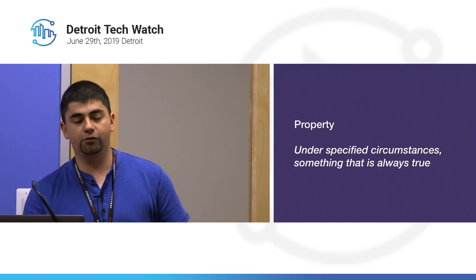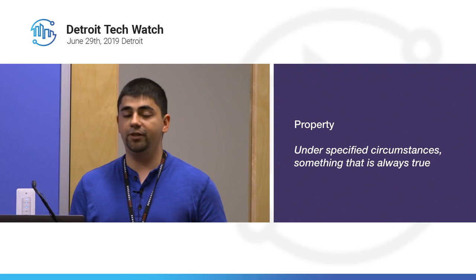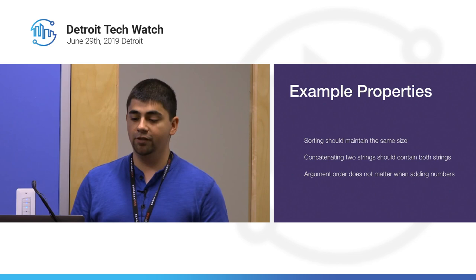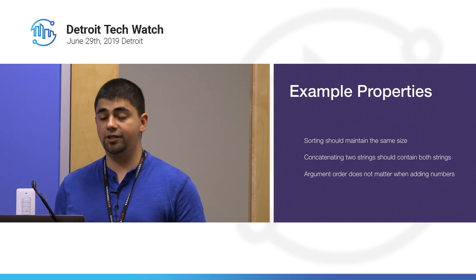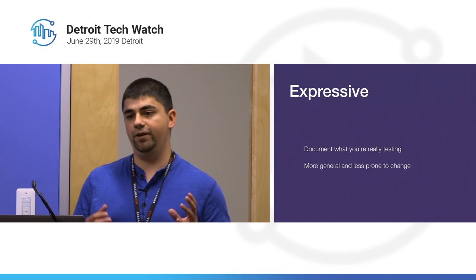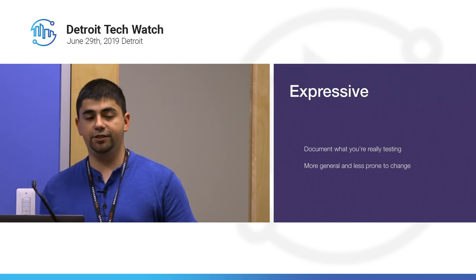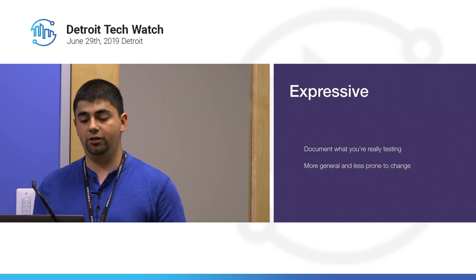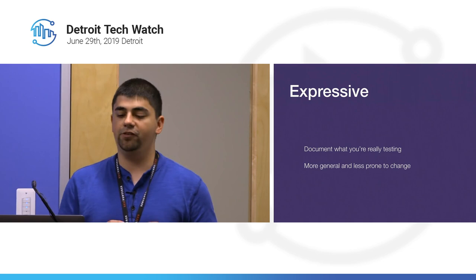So what do I mean by property? A property is: under given circumstances, something that is always true. For example, sorting should always maintain the same size; concatenating two strings should contain both strings; argument order does not matter when adding two numbers. Thinking at the property level is really expressive — you're documenting what you're truly testing for — and properties are more general and less prone to change than specific concrete examples.